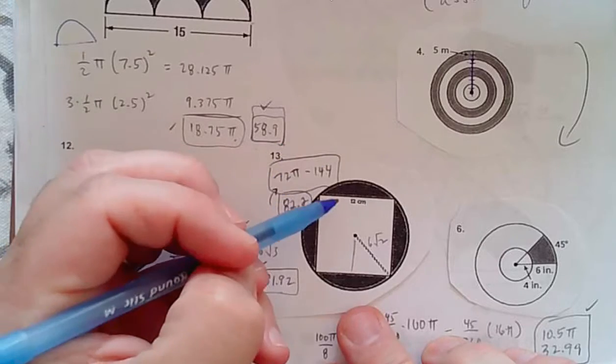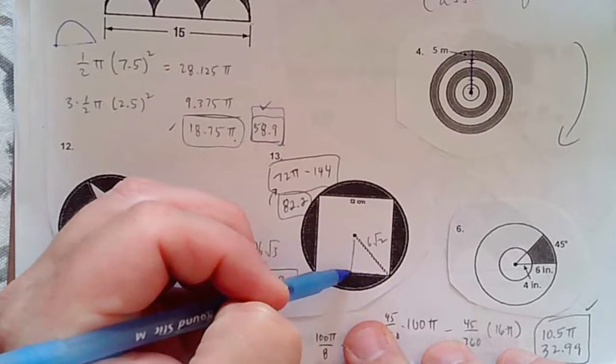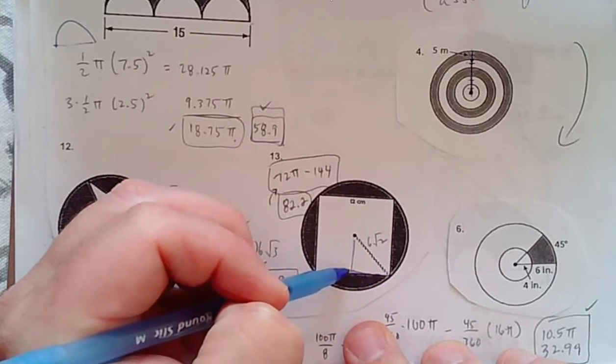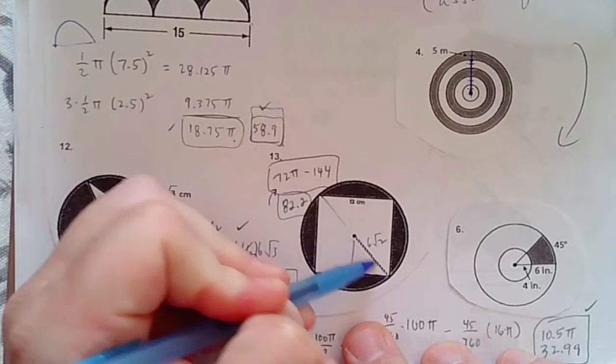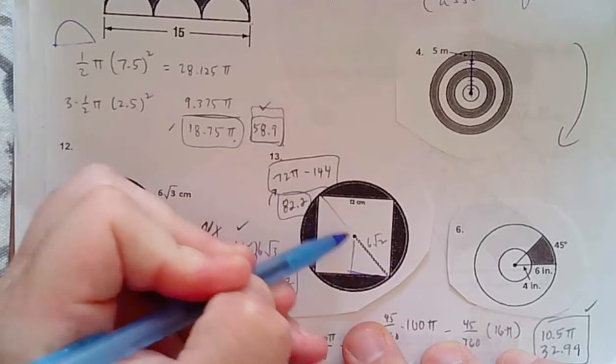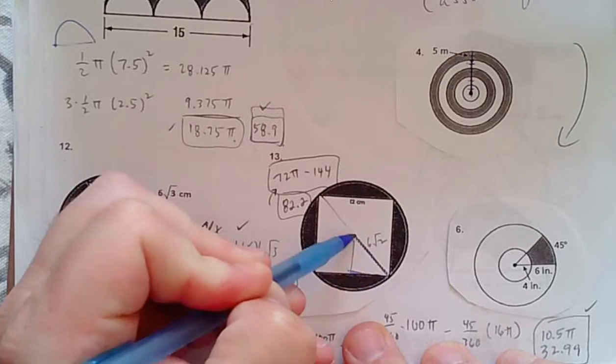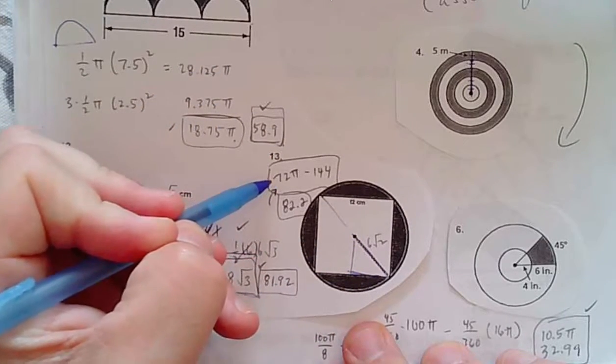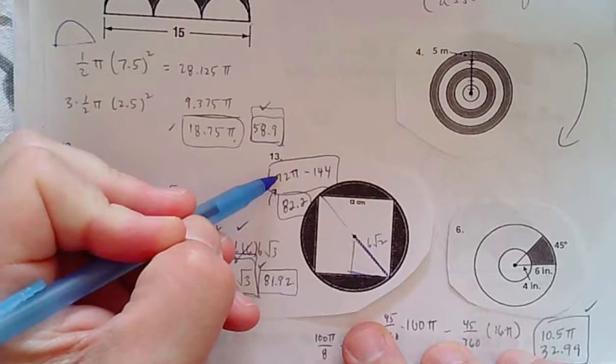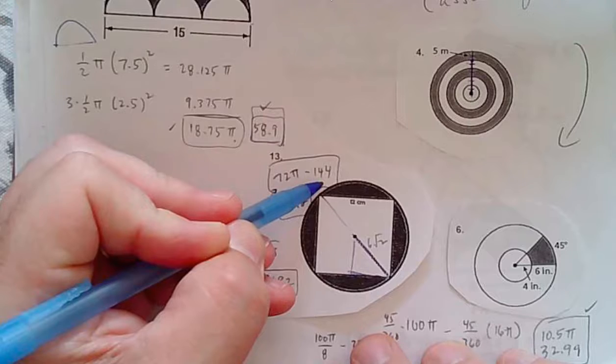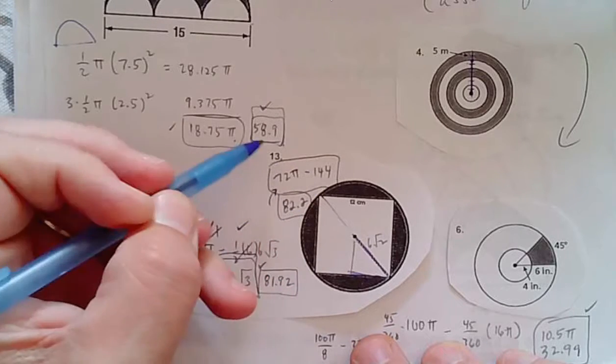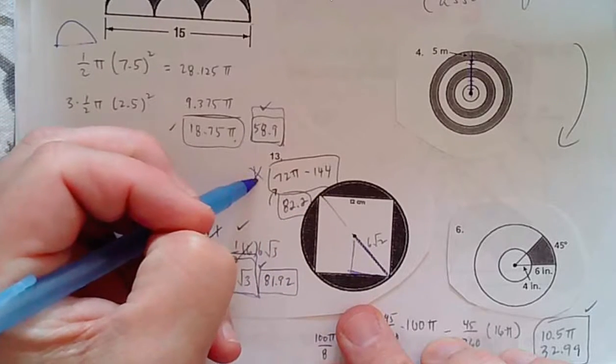Over here, I know that this distance is 6. This distance is 12√2 because it's a 45-45-90 triangle. So I know the radius is 6√2. πr², 6√2 squared is 72. 72π minus the area of the square, 144. Again, that's the answer I'm looking for.